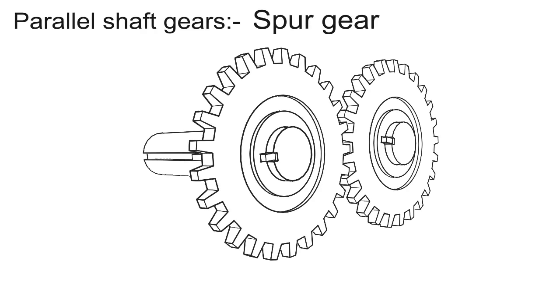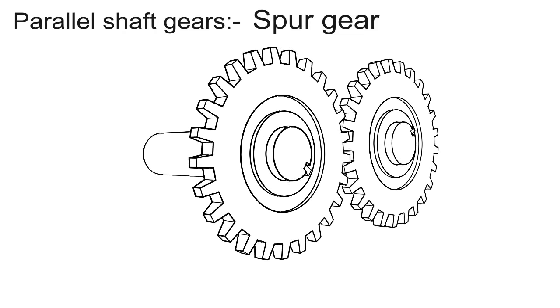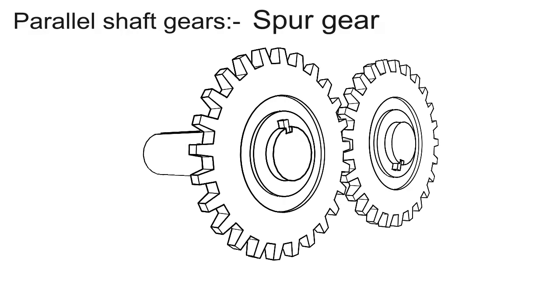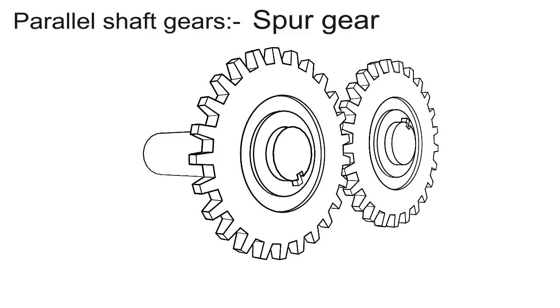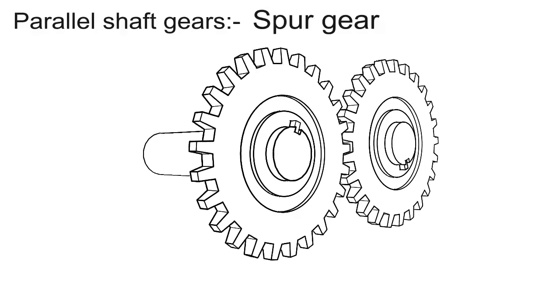Now we are going towards the brief description of gears. Parallel shaft gears — first one is spur gear. Spur gears have straight teeth parallel to the axis, and thus they are not subjected to axial thrust due to the tooth load. When a change of direction between the two shafts is required, spur gears cannot be used.